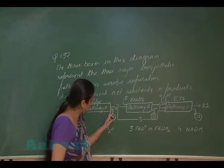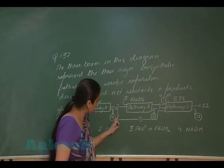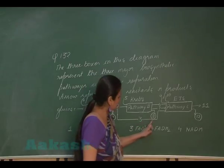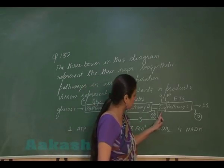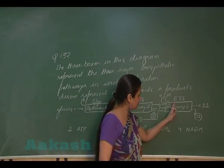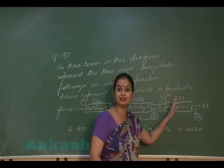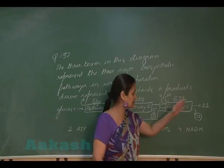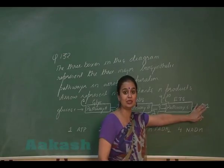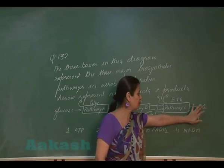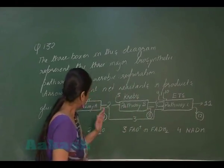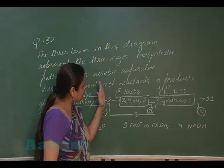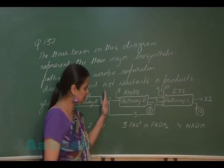The 3rd product formed in glycolysis is NADH. NADH enters the respiratory pathway in the electron transport system, where after oxidation it results in the formation of a water molecule. After glycolysis, the link reaction will occur.